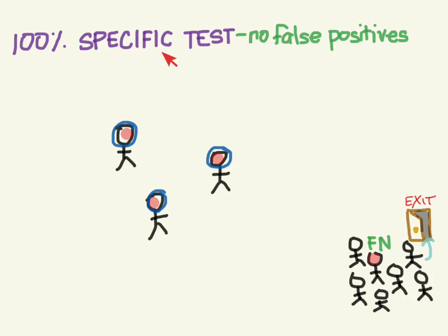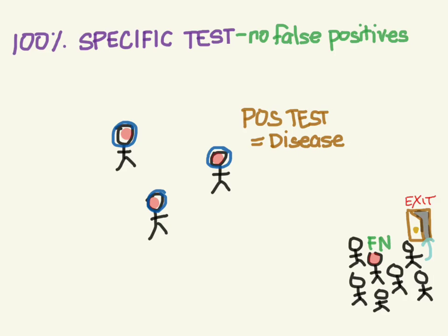With a 100% specific test, all the patients who had a positive test have the disease — we're sure of that. In medical parlance, when we've determined someone has a disease, we say they've been ruled in. So a 100% specific test, when it is positive, will rule in the disease. This spells SPIN: Specific, Positive, rules IN.